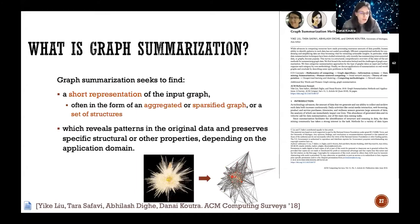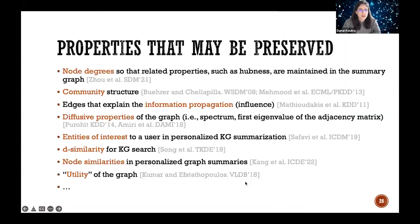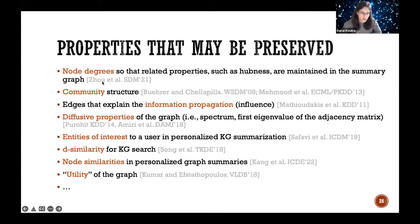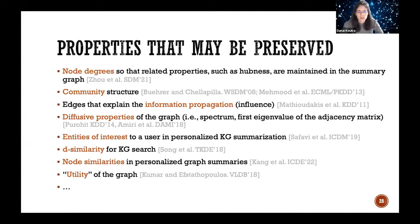At the bottom of a slide you can see a super graph, which consists of super nodes — collections of nodes in the original graph — and super edges that connect those nodes. In terms of properties that may be preserved, some methods try to preserve the node degree distribution, others the community structure, others the information propagation and diffusive properties — which maps to preserving the first eigenvalue of the adjacency matrix — and others look at preserving entities of interest or query-answering utility.